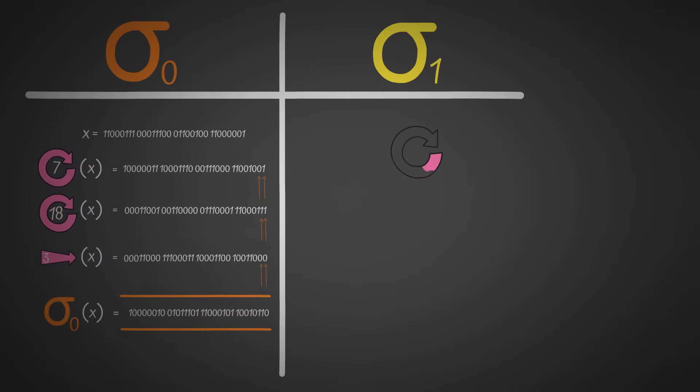Sigma 1 is the exact same, pretty much, but we do a right rotation of 17, followed by a right rotation of 19, followed by a right shift of 10. Then we do bitwise addition modulo 2, and we get the output of sigma 1.